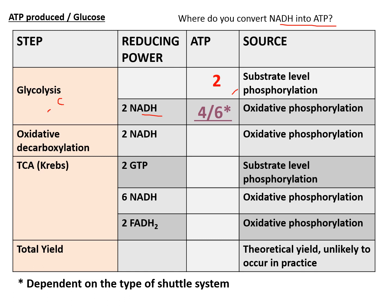In oxidative decarboxylation, the two NADH yield six ATPs since one NADH equals three ATPs via the electron transport chain — this is done by oxidative phosphorylation. In the Krebs cycle, you get two GTP equal to two ATPs by substrate level phosphorylation, plus six NADH times three equals 18 ATPs, and two FADH2 times two equals four ATPs — again via oxidative phosphorylation.